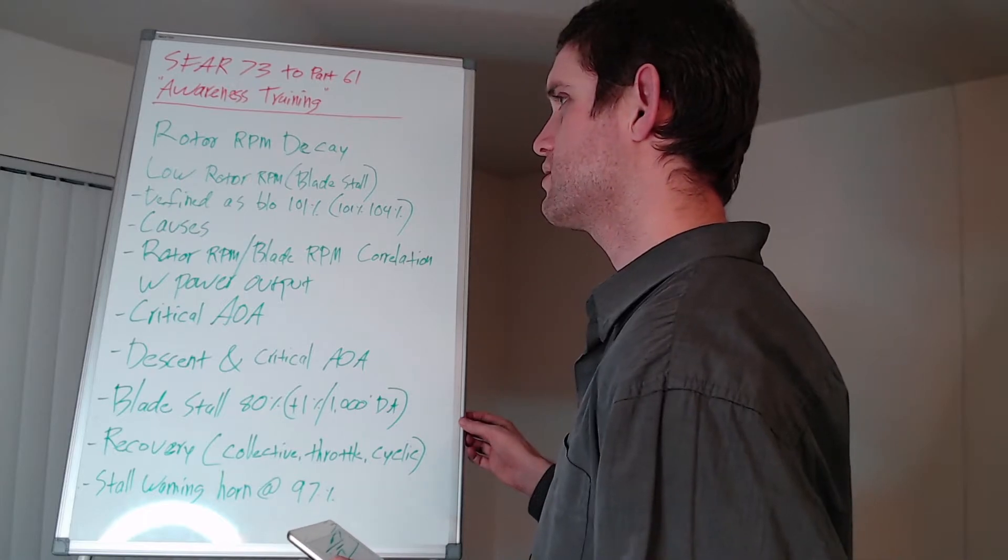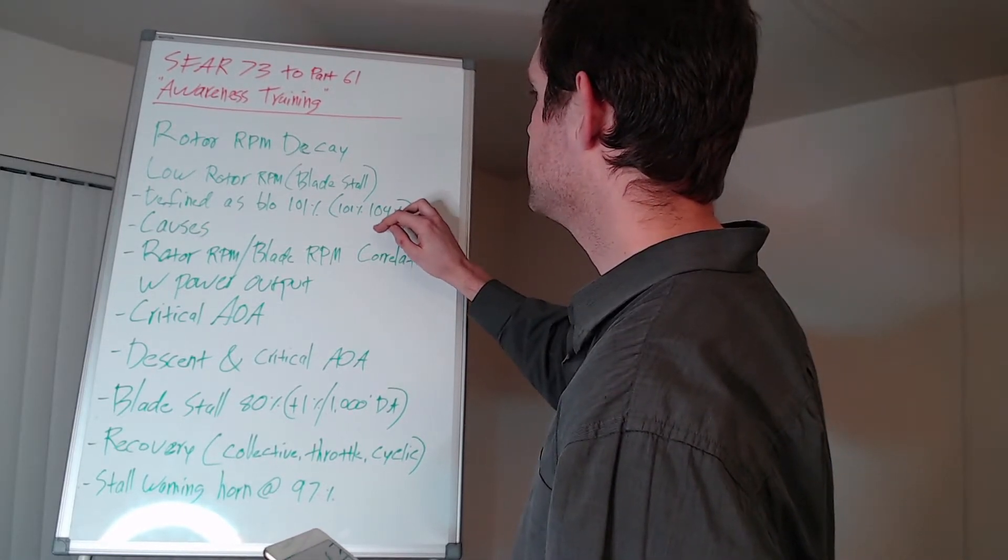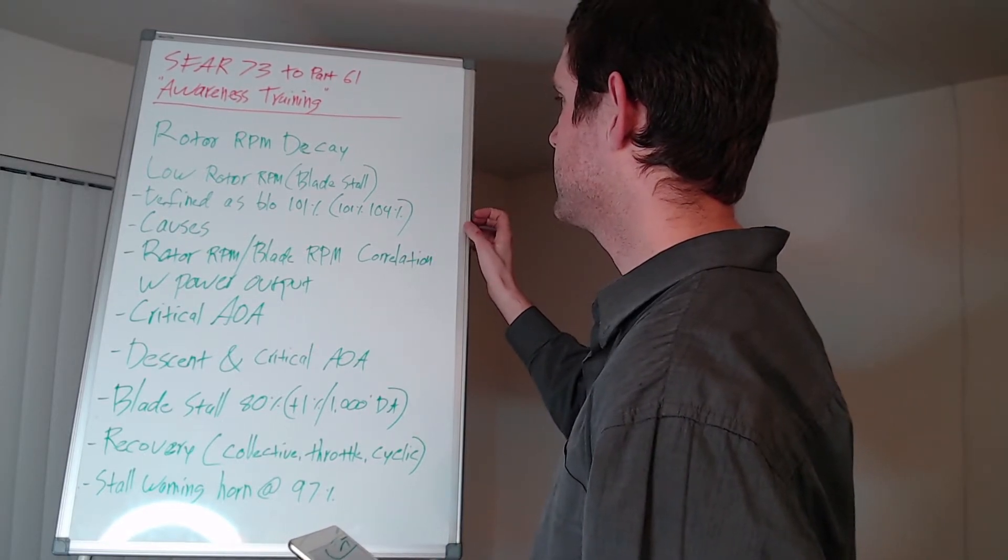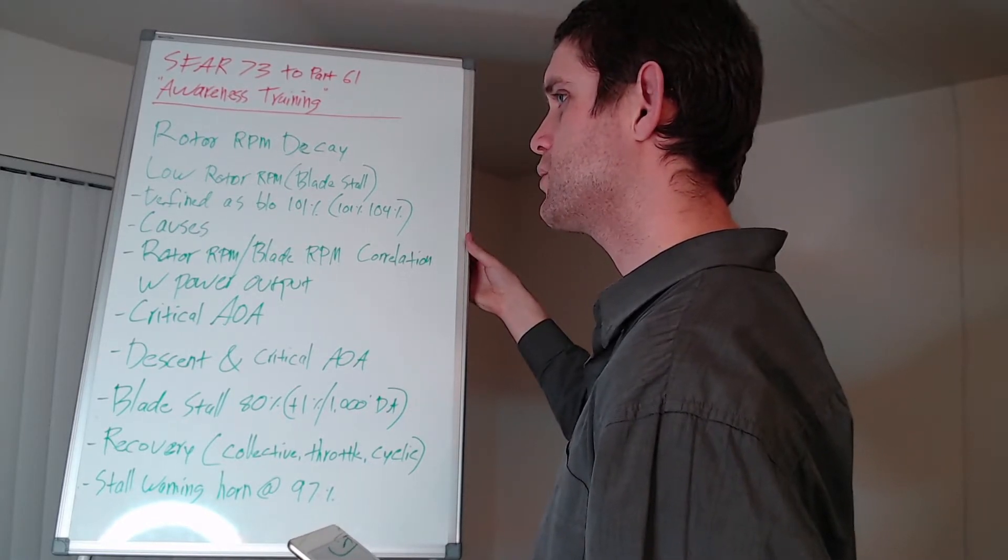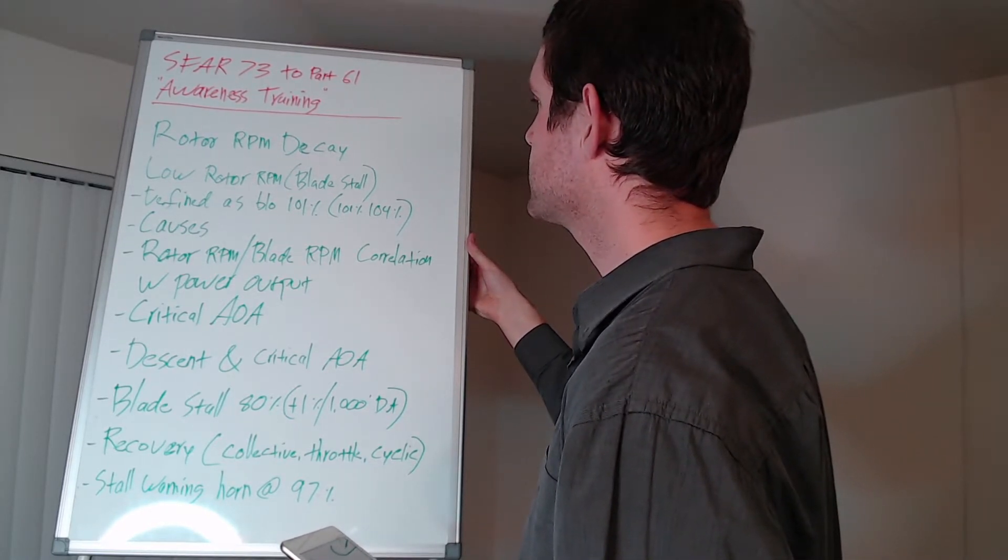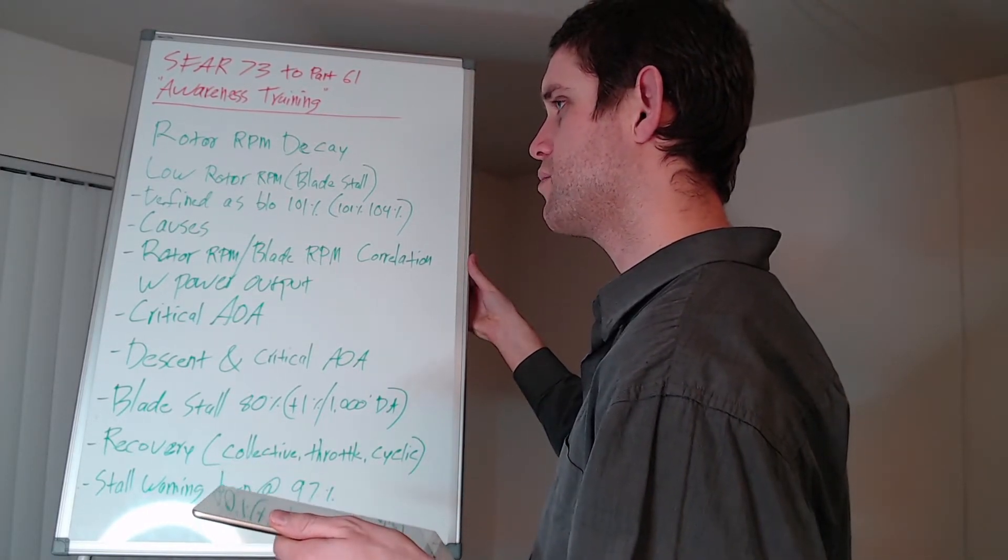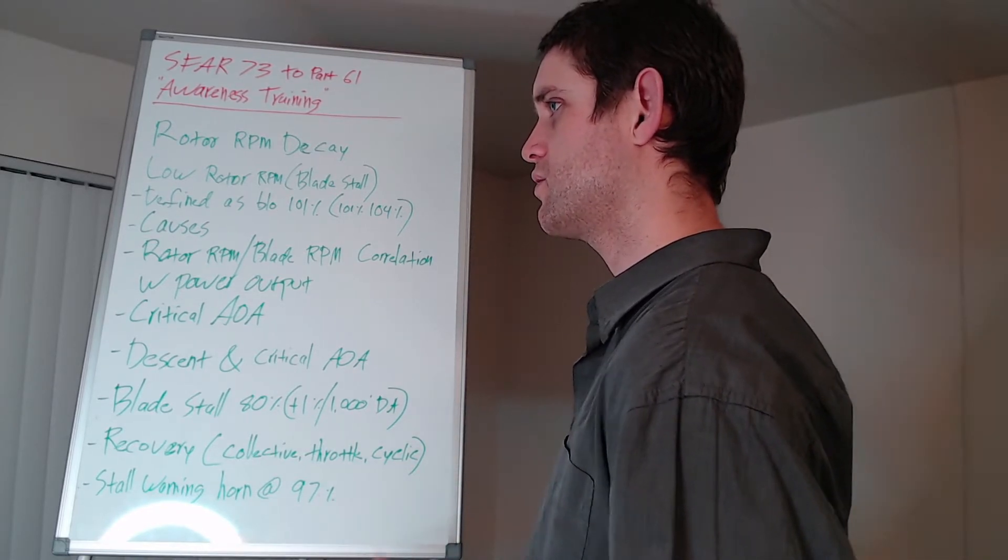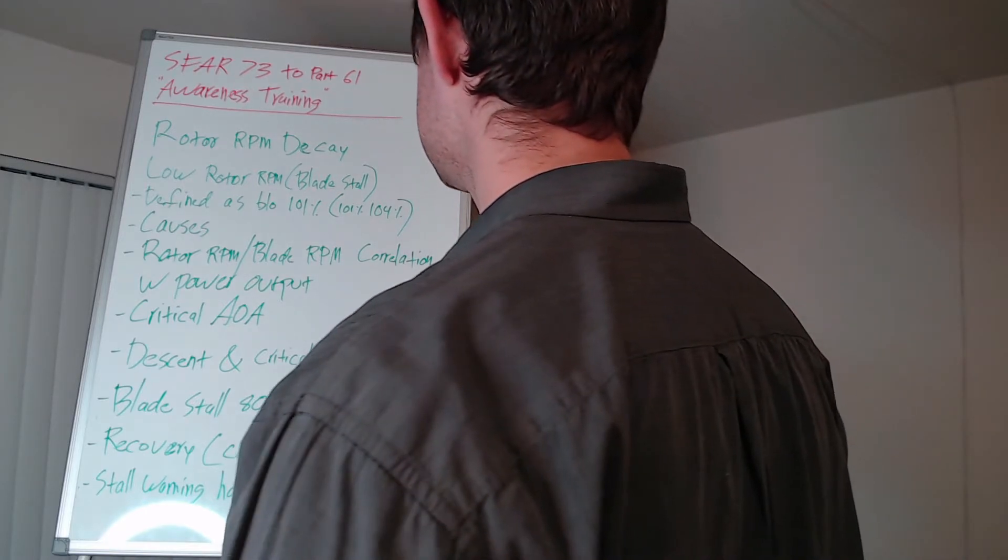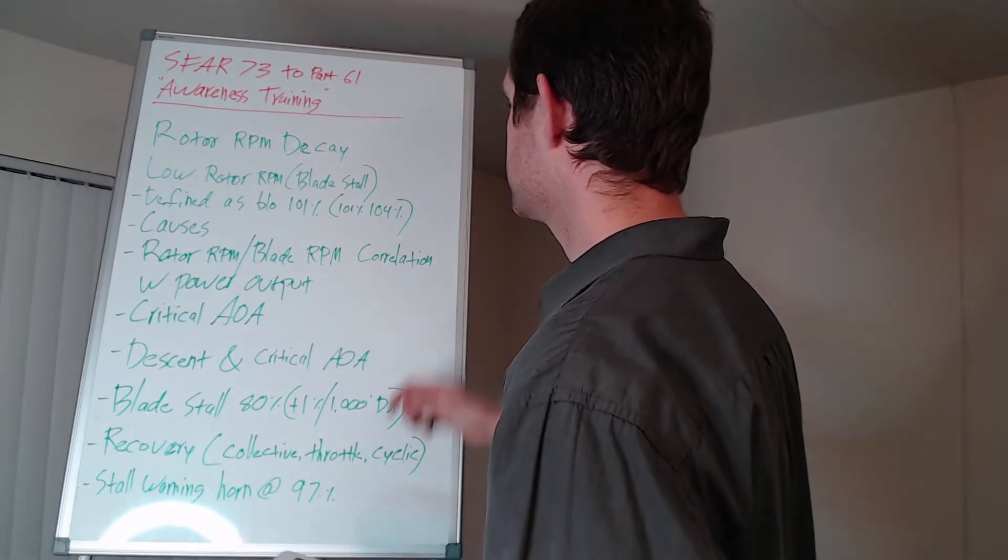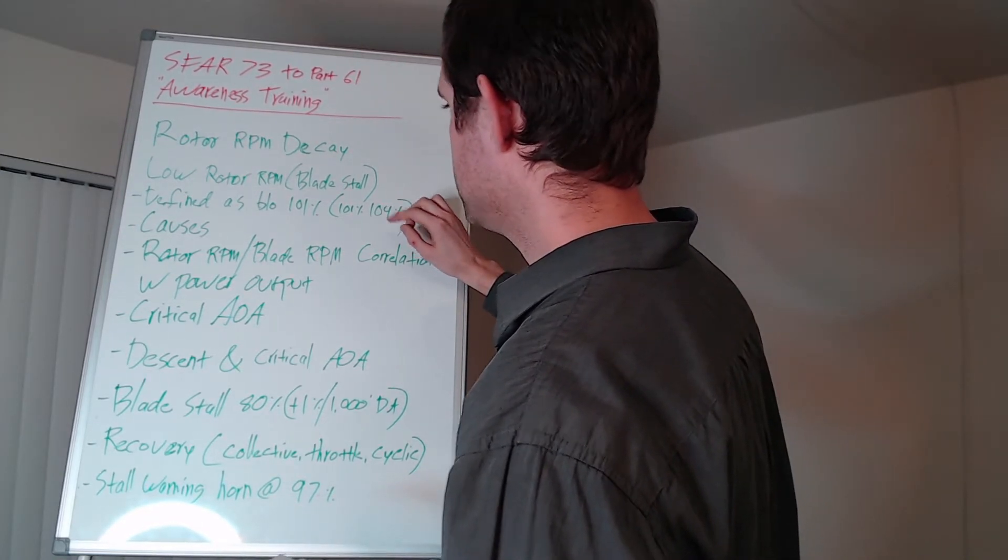As rotor RPM decreases, let's say you drop from 100% rotor RPM down to 90%, your engine power is decreased by the same 10%. And as your rotor blade RPM is decreasing, you will have to further increase the amount of collective to maintain lift, which in turn increases the amount of drag, which in turn pulls the engine RPM down even further. It's a bit of a vicious cycle.